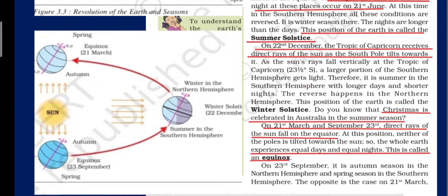This condition is known as equinox. 'Equi' means equal and 'nox' means night, so equinox is the time when all places on earth have equal duration of day and night — that is, 12 hours each. We have equinox on 21st March and on 23rd September.